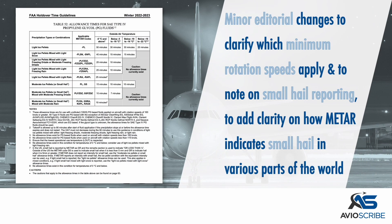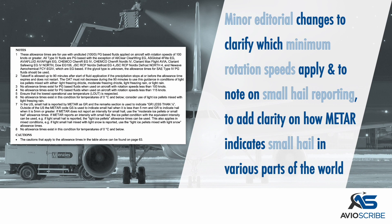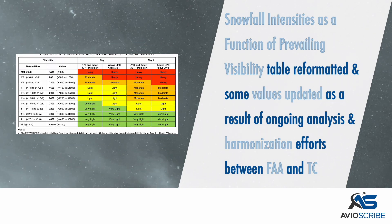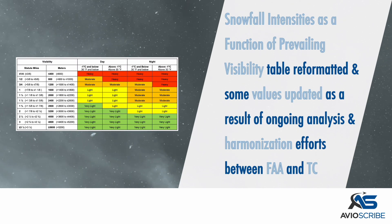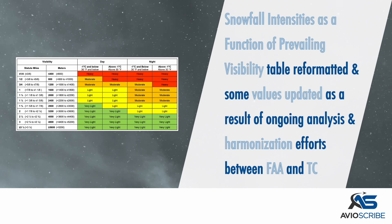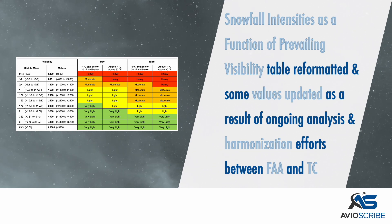Minor editorial changes have been made to clarify which minimum rotation speeds apply to which allowance times, and to the note on small hail reporting, to add clarity on how a meter indicates small hail in various parts of the world. The snowfall intensities as a function of prevailing visibility table has been reformatted and some values updated as a result of ongoing analysis and harmonization efforts between the FAA and Transport Canada.